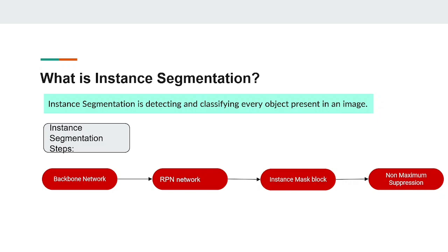Instance segmentation differentiates between different objects of the same class as well as other classes, and classifies them separately. The steps of the instance segmentation model are: first, the input image is fed into the backbone network, generally made of multiple layers of CNNs, which outputs feature maps. These are then fed into the Region Proposal Network (RPN), which identifies regions with a high probability of containing objects. The proposals are then fed into the instance segmentation mask model, and after generating the mask, non-max suppression is applied to get the final instance mask.